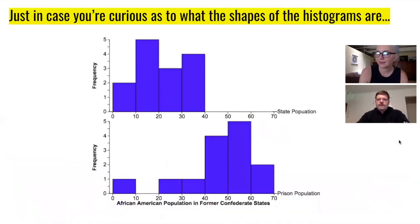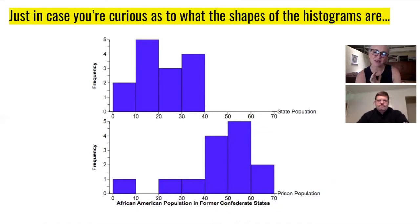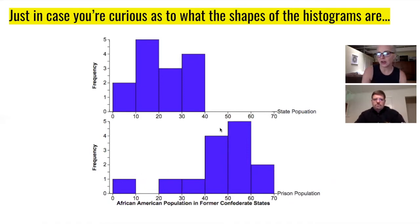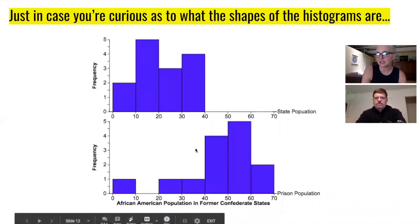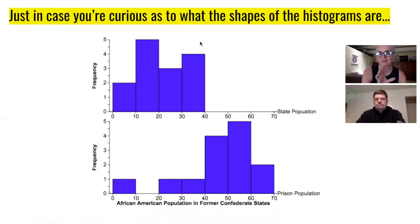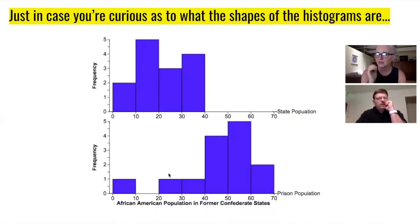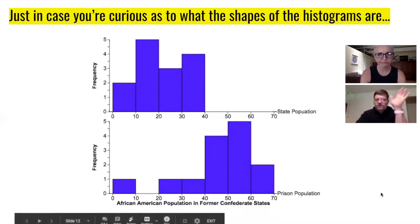In case it's hard to pull information off the box and whisker plot at first, here's what the histograms look like. See how the outlier made the left skew really obvious in the prison data, whereas without an outlier the left skew in the state data is there but not super significant.